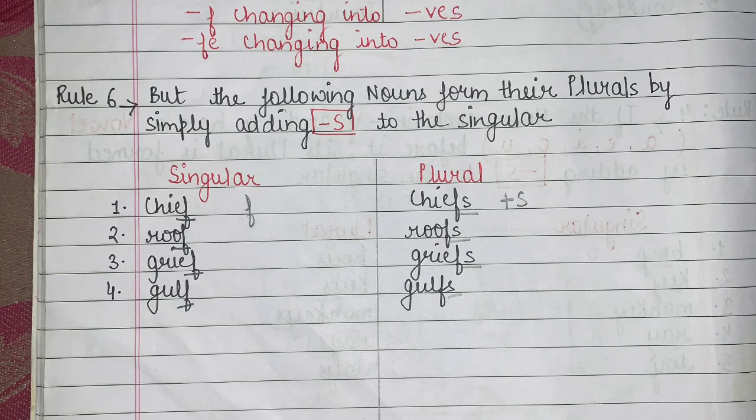Roof becomes roofs — I will just be adding S. Roof, roofs. Grief becomes griefs. Gulf becomes gulfs. So you can see how easily I can change my singular into plural by just understanding all these rules.